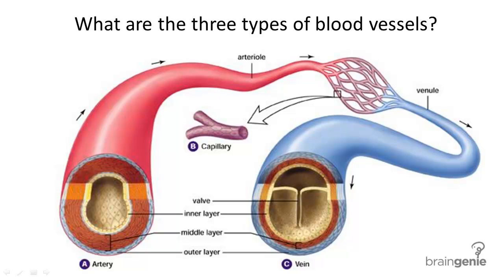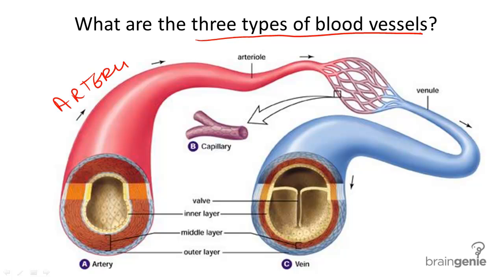Our goal for this lesson is to learn the structure and function of the three major types of blood vessels in the body. They are part of the circulatory system. They are arteries, veins, and capillaries.